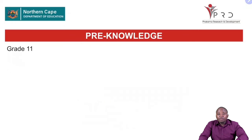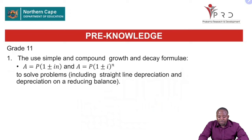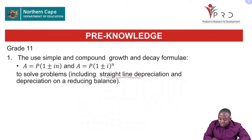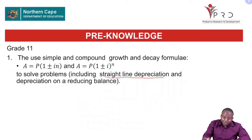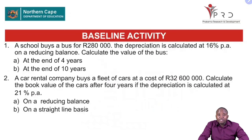Pre-knowledge: you are supposed to know the following coming into this lesson. You must know how to use simple and compound growth and decay formulae — A equals P(1 plus-minus i)n and A equals P(1 plus-minus i) raised to the power n — to solve problems, including straight line depreciation and depreciation on a reducing balance. Before we start, let's have a revision or baseline activity that focuses on depreciation on straight line and depreciation on reducing balance.